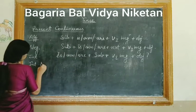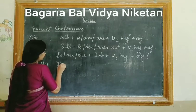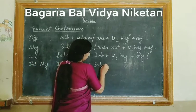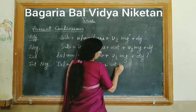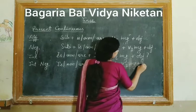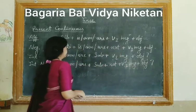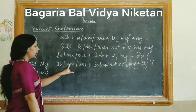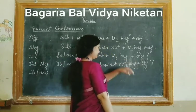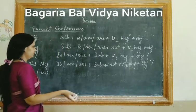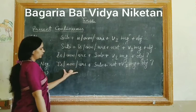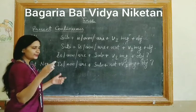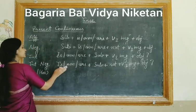Next is interrogative negative. The formula is: Is/Am/Are + subject + not + verb's first form with -ing + object + question mark. For example: 'Am I not writing a letter?' — Kya mein ek khat nahi likh raha? Similarly: 'Kya tum ek khat nahi likh rahe ho?' 'Kya tum vahaan nahi ja rahe ho?' 'Kya tum apne ghar ki dekhbhal nahi karte ho?' — usi way mein is cheez ko likh sakte hain.